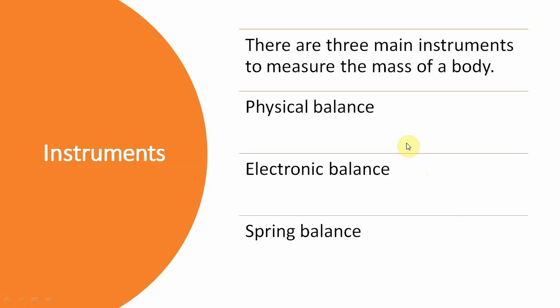There are several instruments in physics which can be used to measure mass of a body. There are three main instruments to measure the mass of a body: number one, physical balance; number two, electronic balance; and number three, spring balance. In our lecture, we are going to study about these three balances which measure the mass.